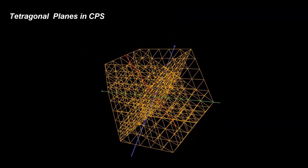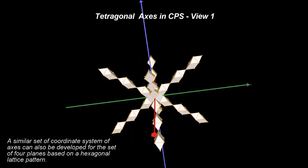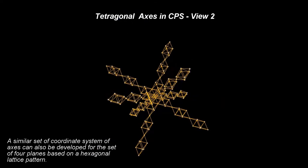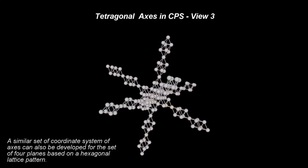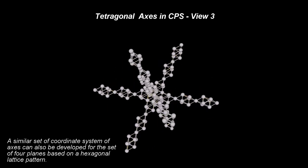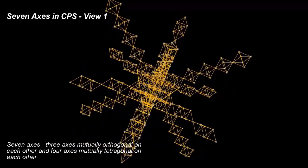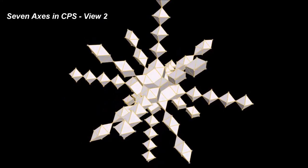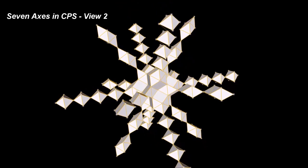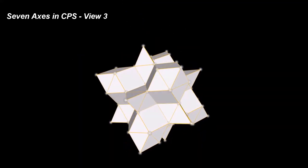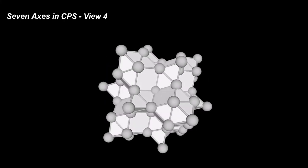These 4 sets of planes are parallel with the faces of a tetrahedron. The intersections of the orthogonal planes corresponding to the square pattern form the Cartesian coordinate system of axes. A similar set of coordinate system axes can also be developed for the set of 4 planes based on the hexagonal lattice pattern. The intersections of these 4 planes form 4 tetragonal axes. These axes are lines, but they are formed by a different pattern than in the orthogonal case. This gives us a more complete coordinate system with 7 different planes — 3 planes having an underlying square pattern and 4 planes having a hexagonal pattern — along with 7 axes: the first 3 mutually orthogonal, and the remaining 4 mutually tetragonal.